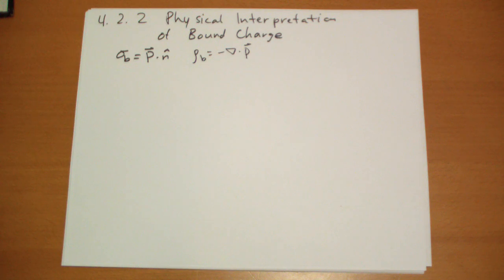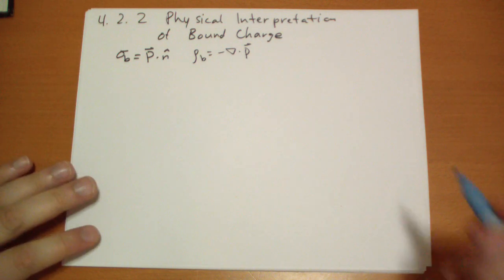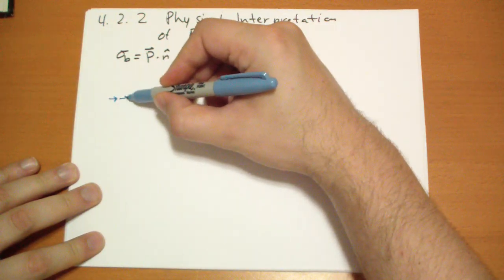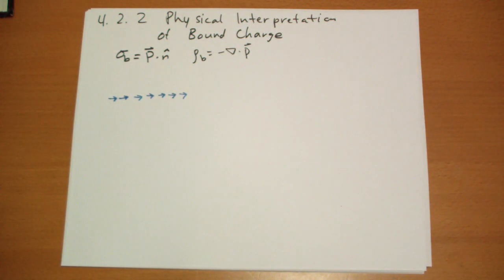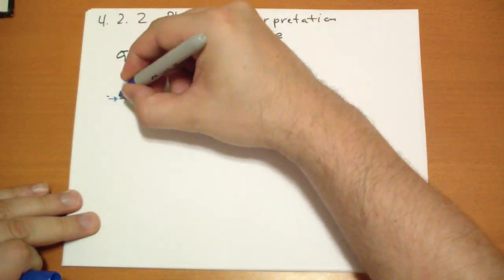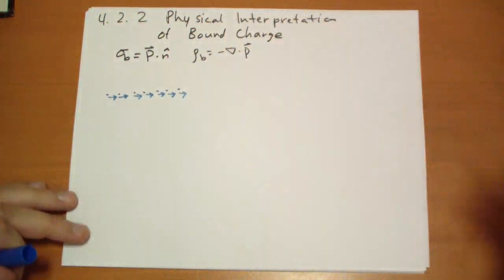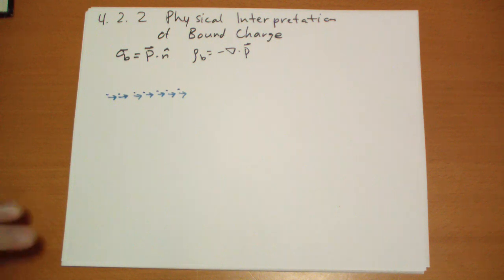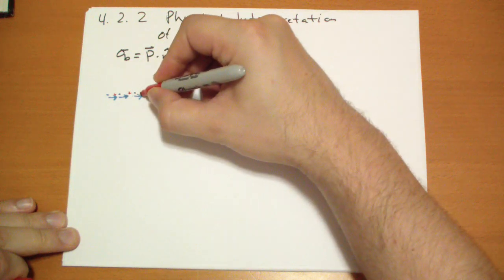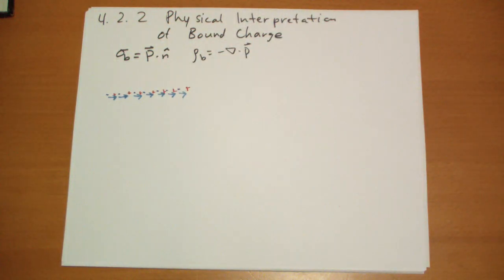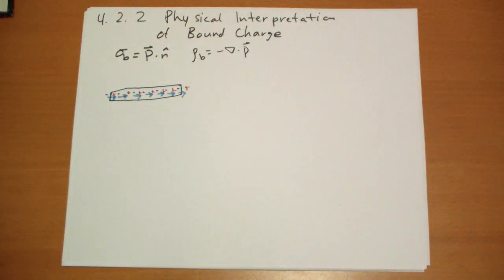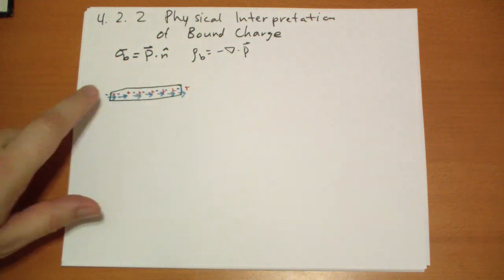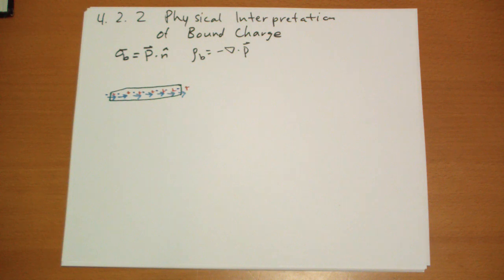So where does the surface bound charge come from? If you take a bunch of tiny little dipoles and line them up, let's draw all the negative charges in blue and all the positive charges in red. You'll note that inside this area there is zero net charge, but at the beginning and end of this chain there's charge that accumulates — that's the surface bound charge.